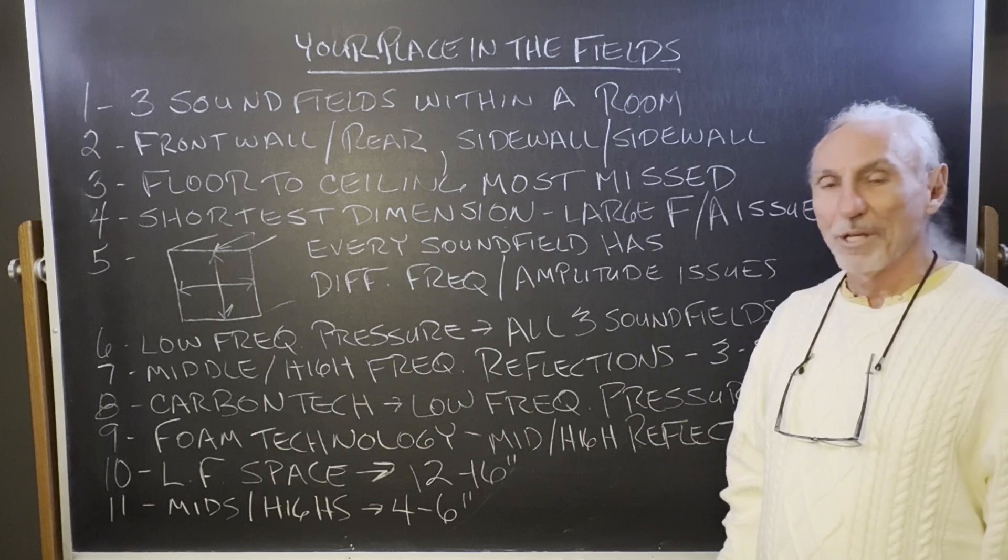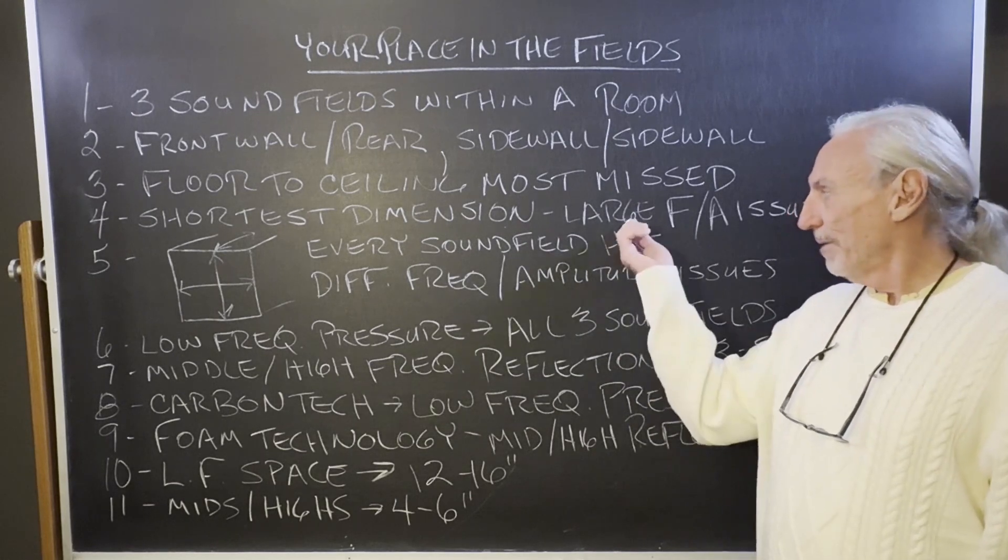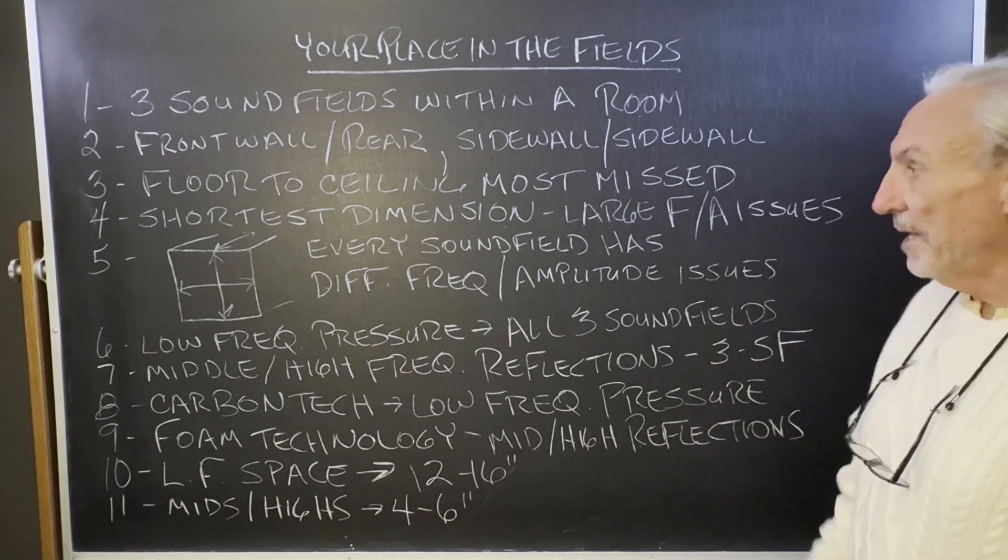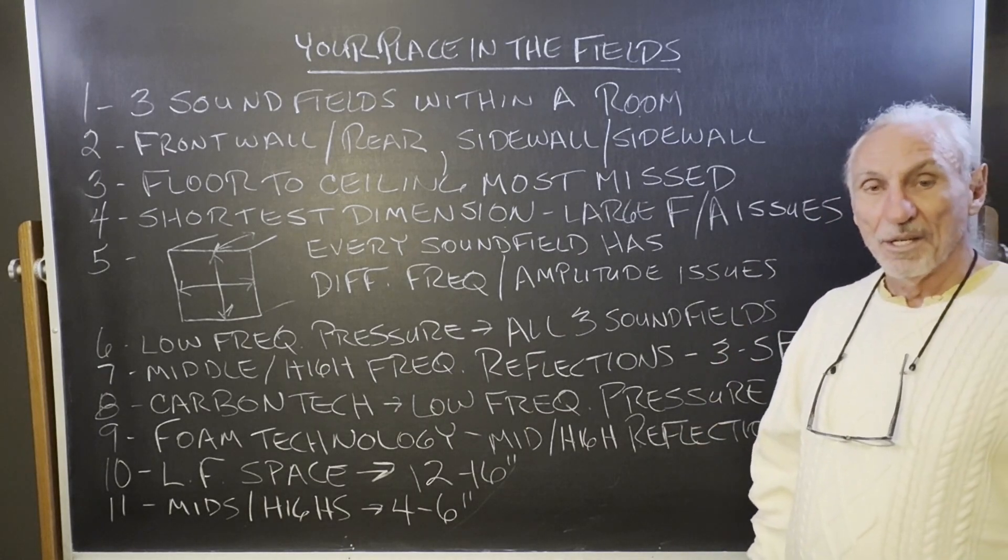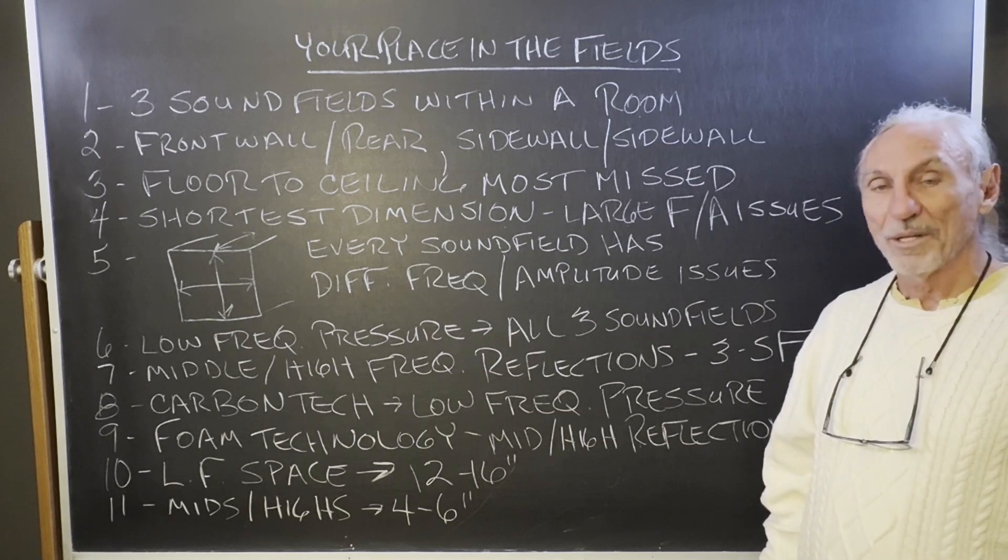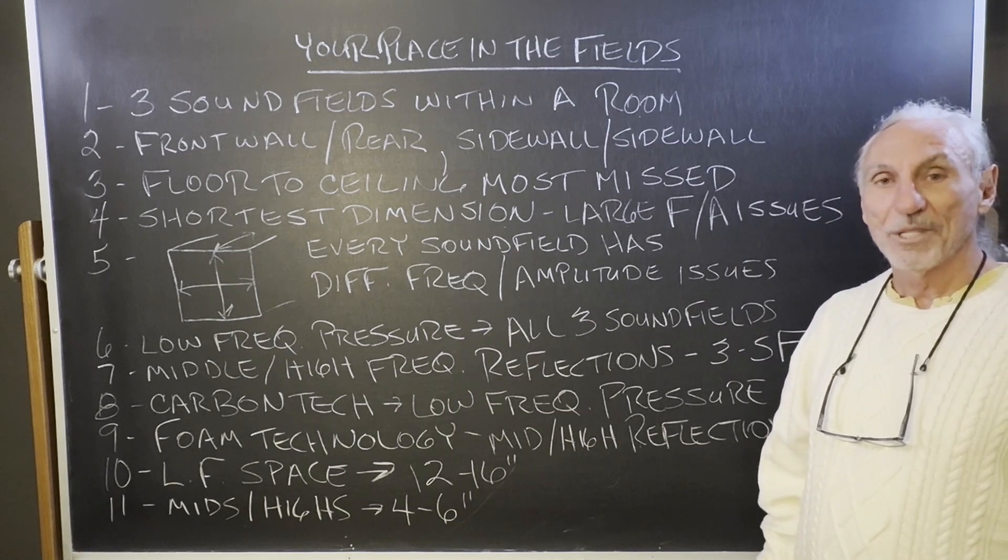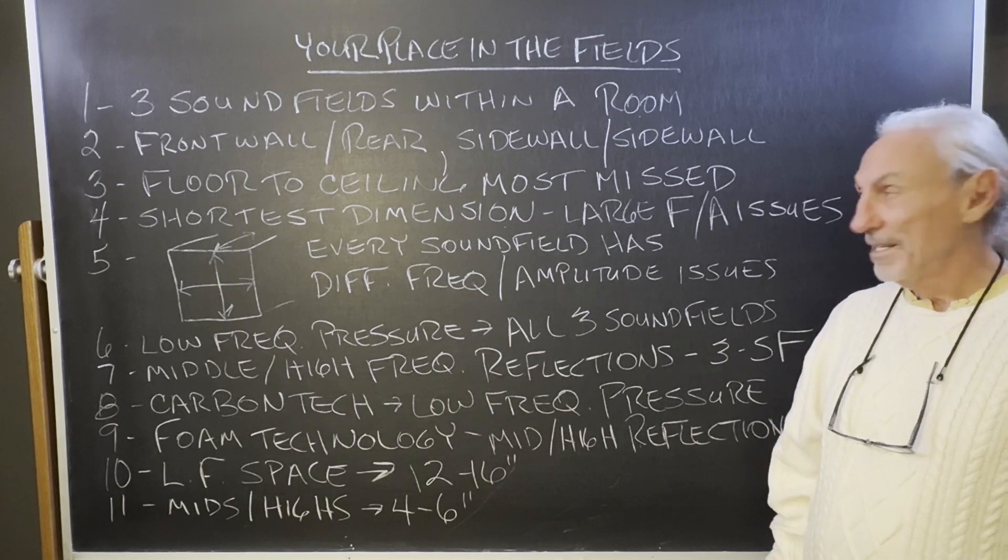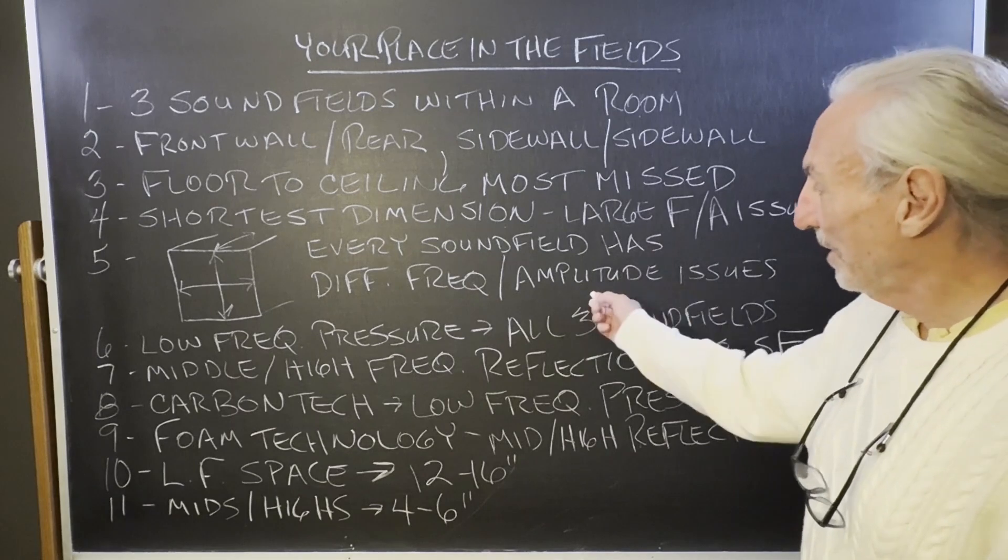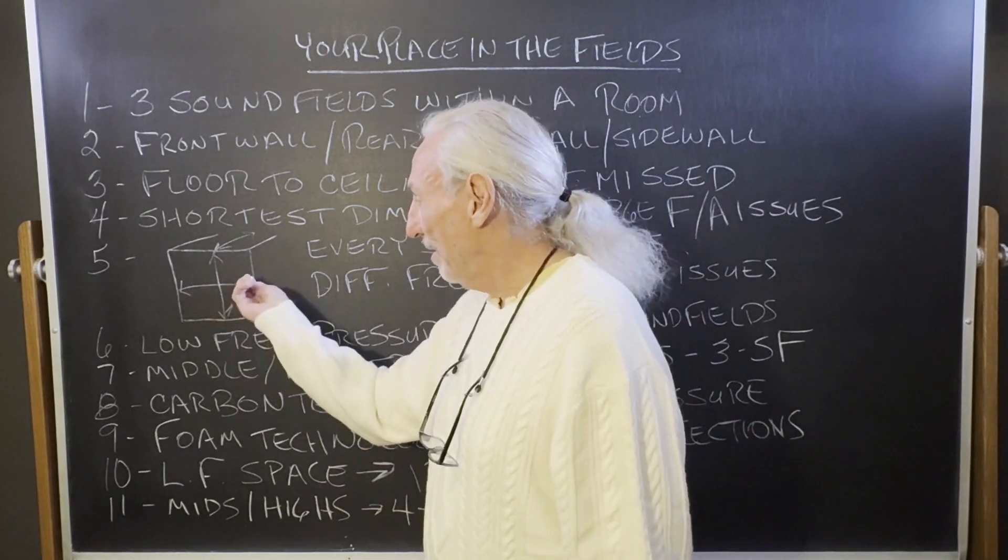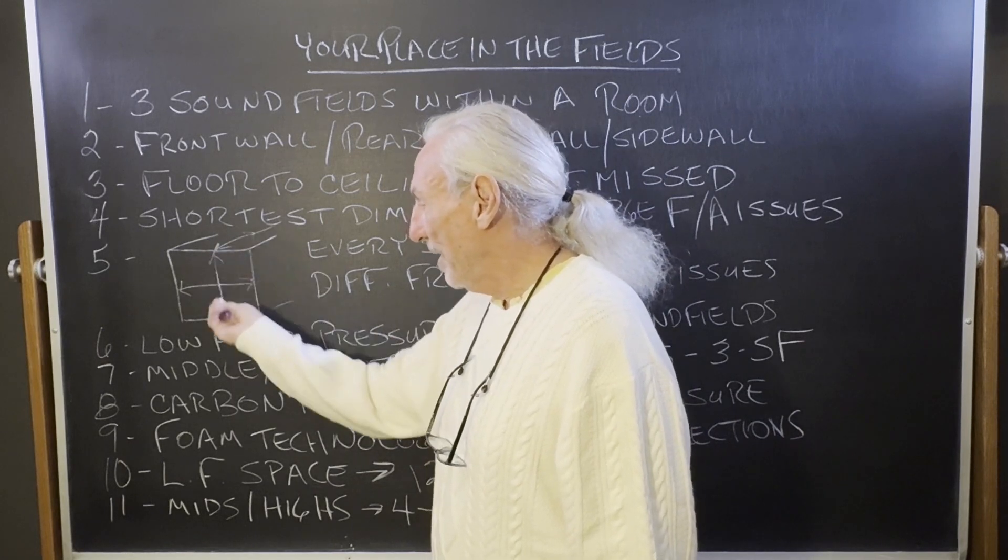We know from acoustics that large frequency and amplitude problems occur when you have small dimensions. Try to squeeze low frequency energy into 10 feet—it doesn't work, especially when a 100 cycle wave is 11.3 feet. Every sound field has a different frequency and amplitude: the width, the length, and the height.